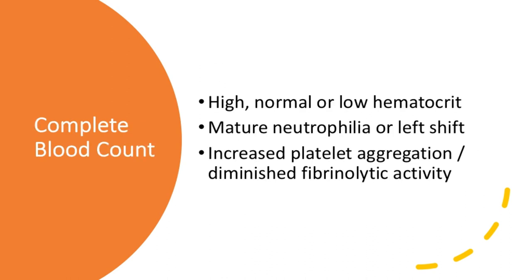Running through some of the typical findings in a DKA patient: the hematocrit can be high, normal, or low. You'll often have a mature neutrophilia or a left shift if there's a possibility of infection or stress, and you can have decreased platelet aggregation and diminished fibrinolytic activity.